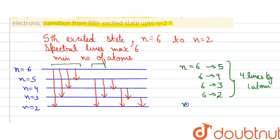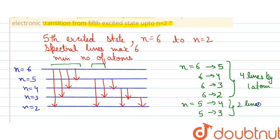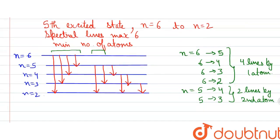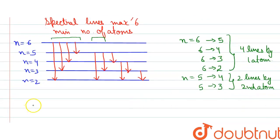If we move on to n equals to five, one atom can move from n equals to five to four, then five to three — so we only need six lines total. These two additional lines can be produced by a second atom. So maximum, we need only two atoms. Minimum two atoms are required.